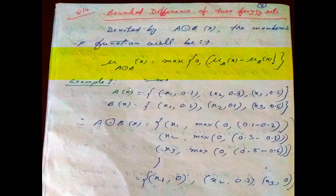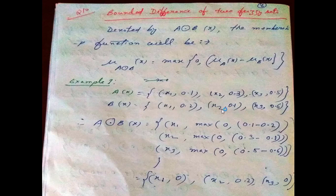Let's take an example. Say A(X) = {X1/0.1, X2/0.3, X3/0.5} and B(X) = {X1/0.2, X2/0.1, X3/0.6}.